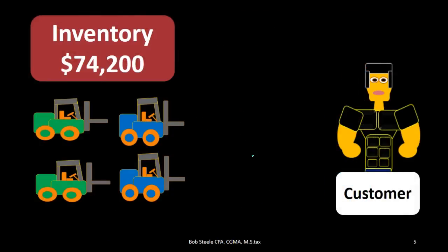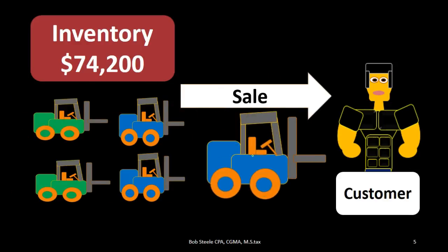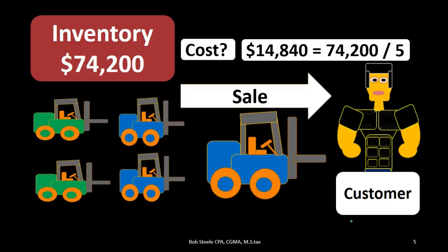The problem happens when we actually sell a forklift. We know what the sales price will be — that's not the issue. The real problem is the cost. How much of that $74,200 do we need to reduce inventory by when we sell one forklift?